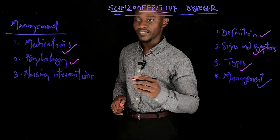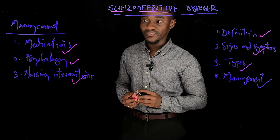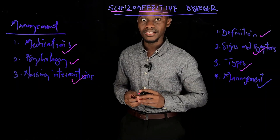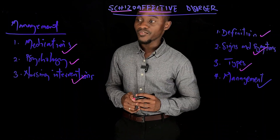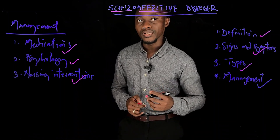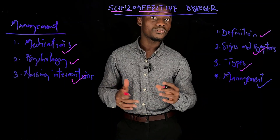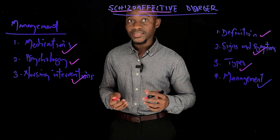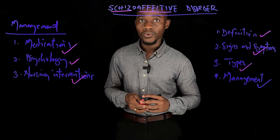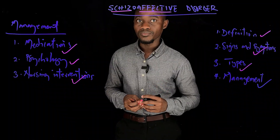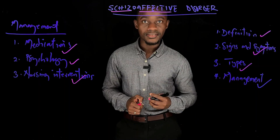Finally, the nursing interventions for schizoaffective disorder combine nursing interventions for schizophrenia and mood disorders. As a nurse, you have to be open, honest, and consistent when communicating with patients. You must build a trusting and therapeutic clinical relationship and not make promises you cannot keep. Provide positive feedback for behaviors that contribute to their health, offer support for behaviors they struggle with, set clear limits and boundaries, and show empathy when caring for them.